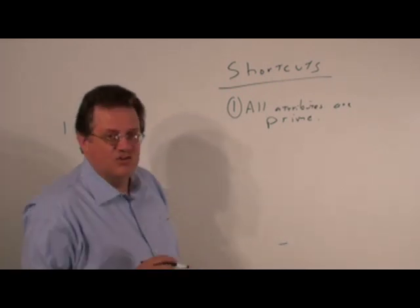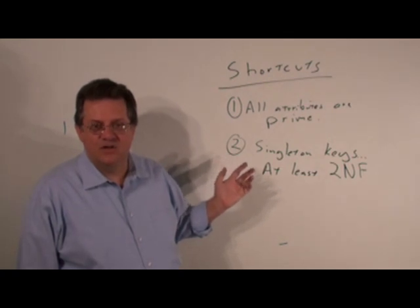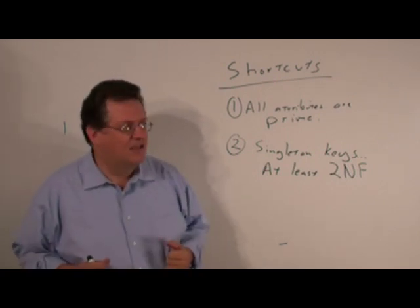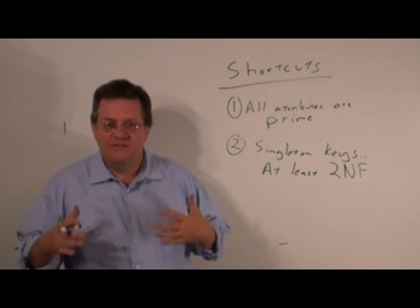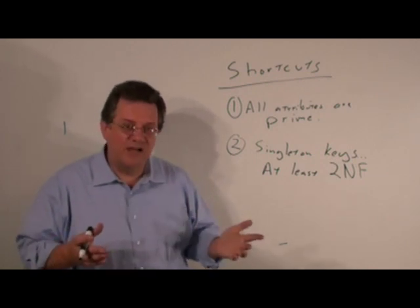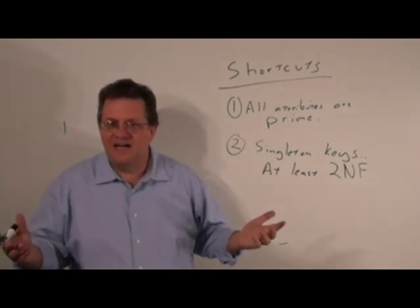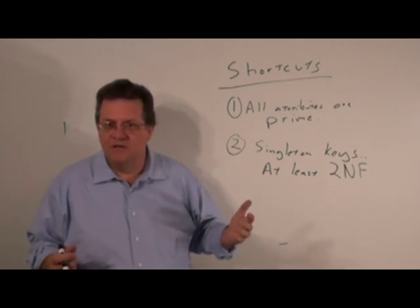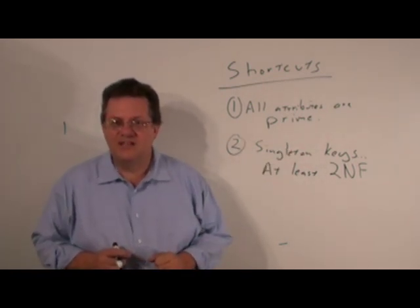Here's a second shortcut. If we observe that all the keys are singleton attributes — such as A, as opposed to AB as a key — then we'll know it's going to be in second normal form. Why? Because to violate second normal form, you have to take a proper subset of a key that functionally determines a non-prime attribute. If you have a singleton key, you can't take a proper subset to violate second normal form. Note that you can still violate third normal form, but singleton keys at least guarantee second normal form.